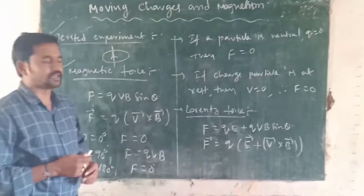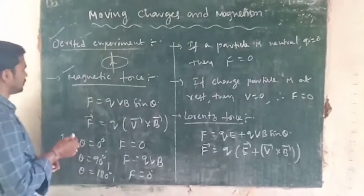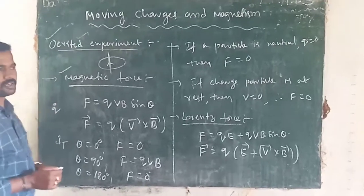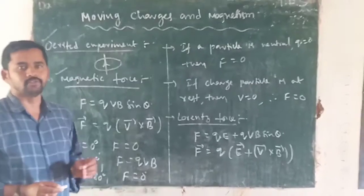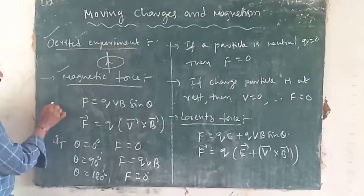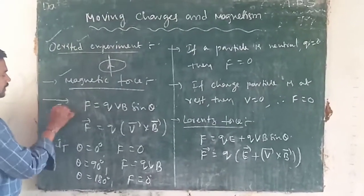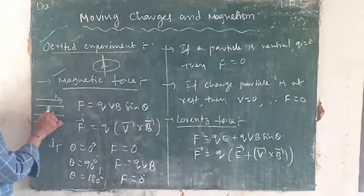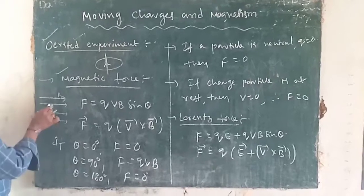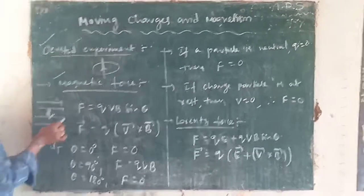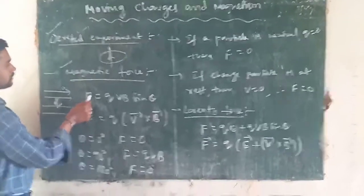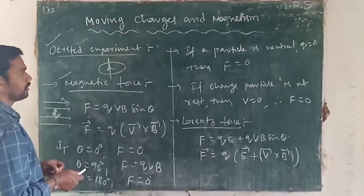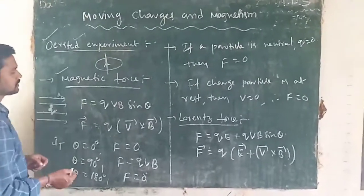Next important topic: magnetic force. What is meant by magnetic force? Suppose I take a charged particle and place it in a uniform magnetic field. The force experienced by the charged particle placed in a magnetic field is the magnetic force. The formula is: F = QVB sin θ.